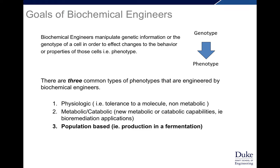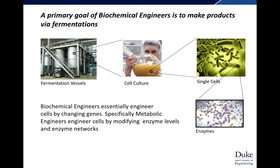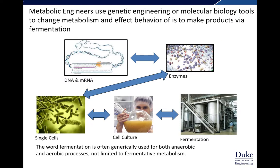That molecule of interest could be a protein, a therapeutic, a small molecule, etc. The primary goal of biochemical engineers is to make products via fermentation. We go from a large-scale industrial or pharmaceutical fermentation down to a cell culture where we can modify the enzymes in these cells to affect behavior back up to the fermentation vessels. Biochemical engineers engineer cells by changing genes, and specifically metabolic engineers engineer cells by modifying enzyme levels and enzyme networks using genetic engineering technologies, editing DNA and mRNA to affect enzymes and enzyme networks, affecting cell population behavior and outputs in industrial fermentation.